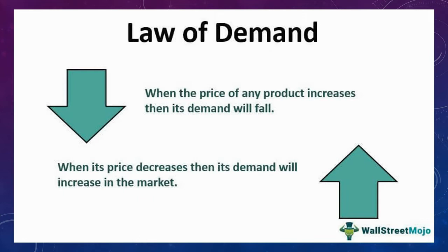When the price of a good rises, it leads to a fall in demand for that good. This is natural consumer choice behavior — a consumer hesitates to spend more for the good with the fear of going out of cash. So the law of demand means when price increases there is a fall in demand, and when price falls there is a rise in demand for commodities. They are inversely related.